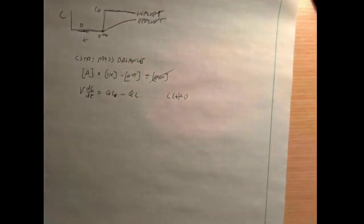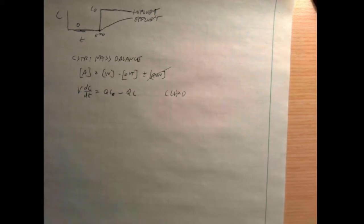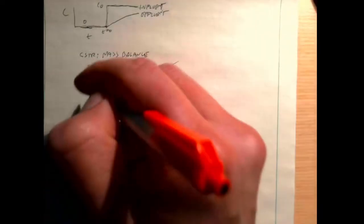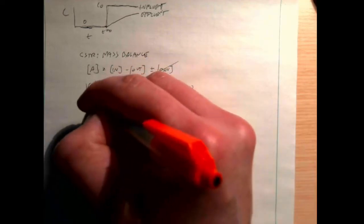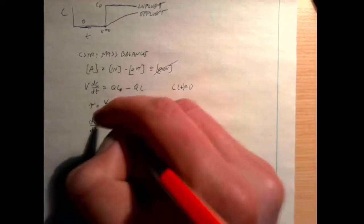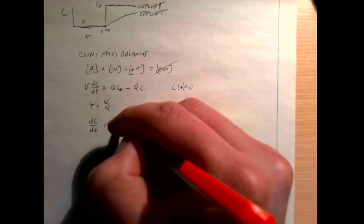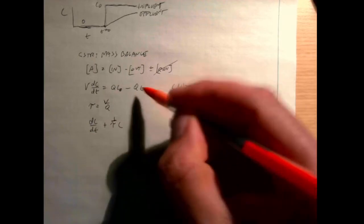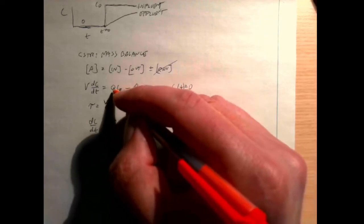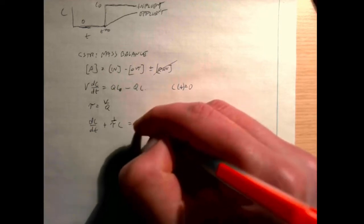Since the concentration was zero before t equals zero, there's no mass in the reactor at the beginning. I'm going to solve this using Laplace transforms. I'll define tau as V over Q — the volume divided by the flow rate. With that substitution, I can rewrite the equation as dC/dt plus (1/tau) times C equals C₀/tau.